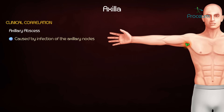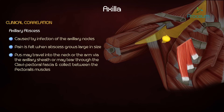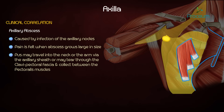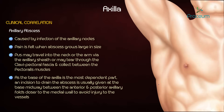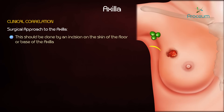Axillary abscess is mainly caused by an infection of the axillary nodes. Pain is usually felt when the abscess grows large in size. The pus may travel into the neck or the arm via the axillary sheath, or may tear through the clavipectoral fascia and collect between the pectoralis muscles. As the base of the axilla is the most dependent part, an incision to drain the abscess is usually given at the base, midway between the anterior and posterior axillary folds, closer to the medial wall to avoid injury to the vessels.